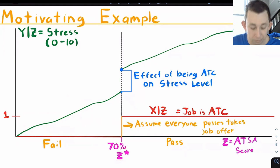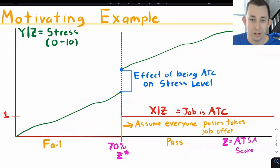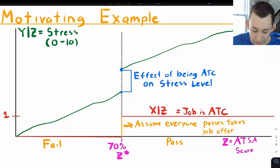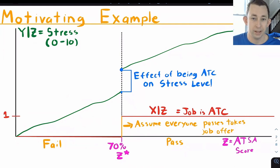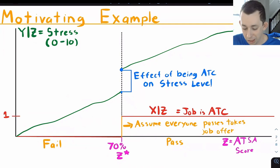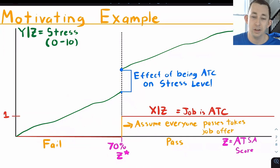We call this ATSA score your running variable, and we call this minimum threshold the critical value Z-star. The red line on the graph is your treatment status — that is your X variable, whether or not you work as an air traffic controller. You need to pass the test to become one: below 70 your treatment status is zero. We also assume that everyone who gets the offer takes the job, so if you score above 70 your treatment status is one.